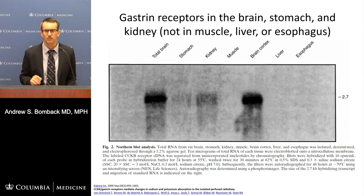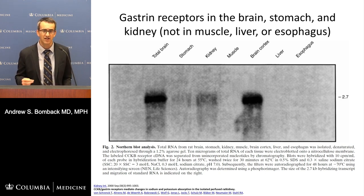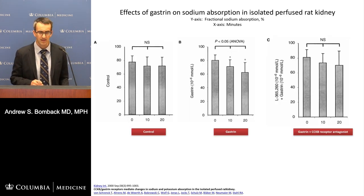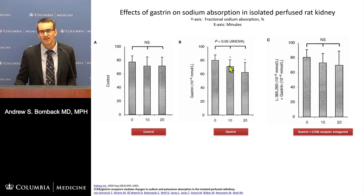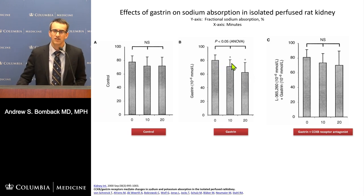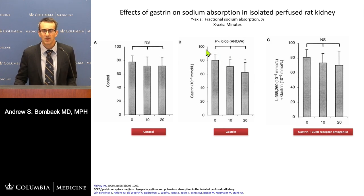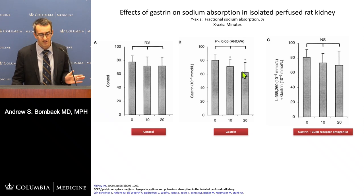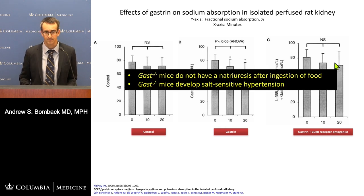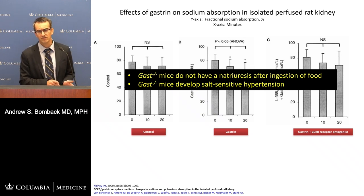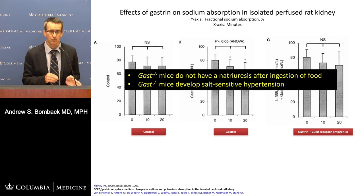The hormone mediating this communication is gastrin. Gastrin is expressed in the brain, the GI tract, and in the kidney — specifically in the proximal and distal parts of the nephron. When you infuse gastrin into an animal, you see less sodium reabsorption in the proximal tubule, with fractional sodium absorption going down and more salt excreted in the urine — essentially using gastrin like a diuretic. If you block gastrin's receptor, you no longer get that natriuresis. In gastrin knockout mice, you get no natriuresis after ingesting food, and those mice develop a salt-sensitive hypertension phenotype.